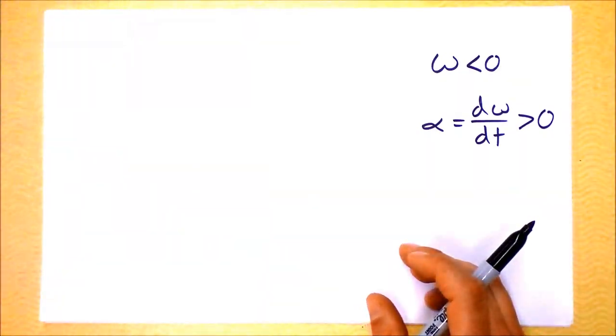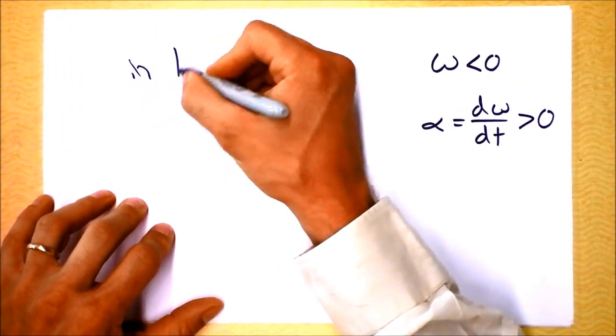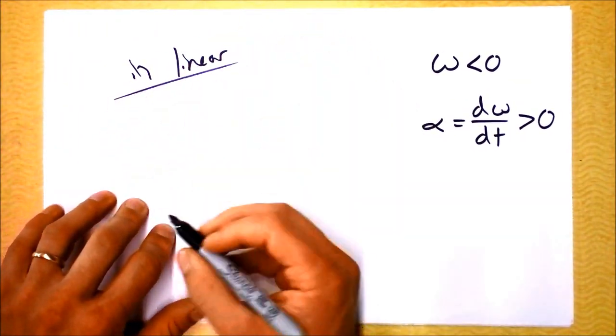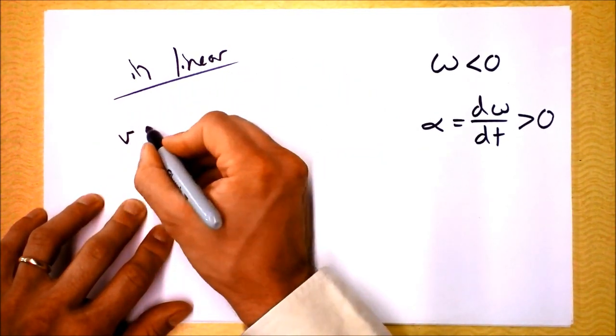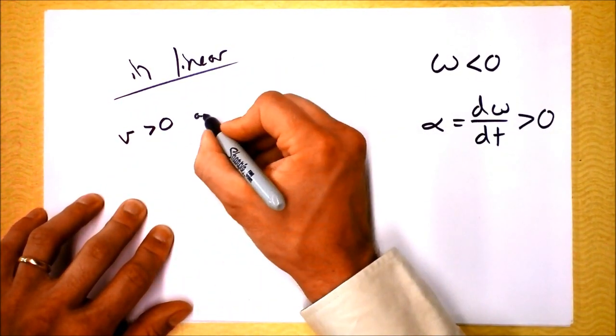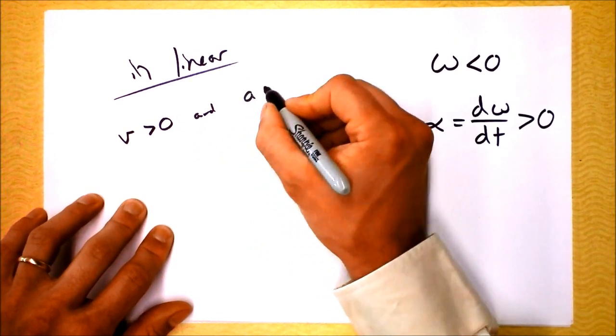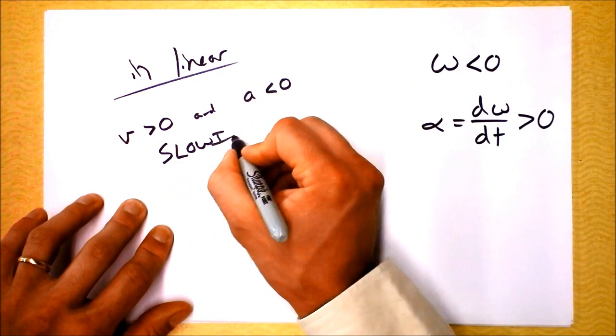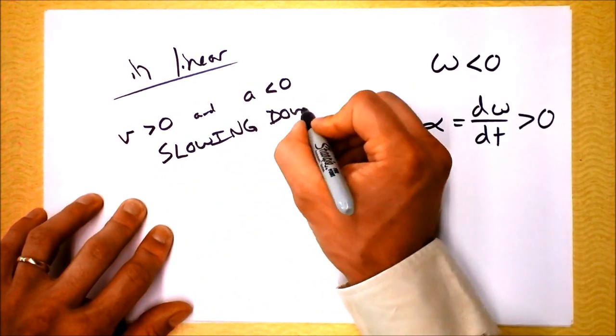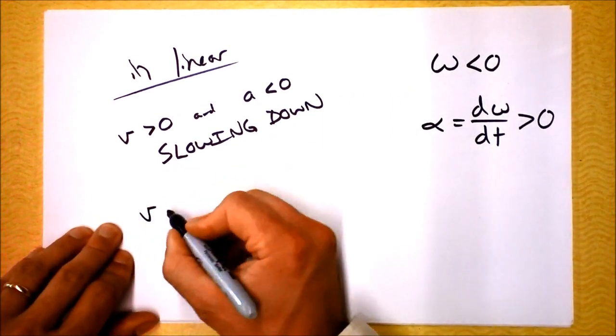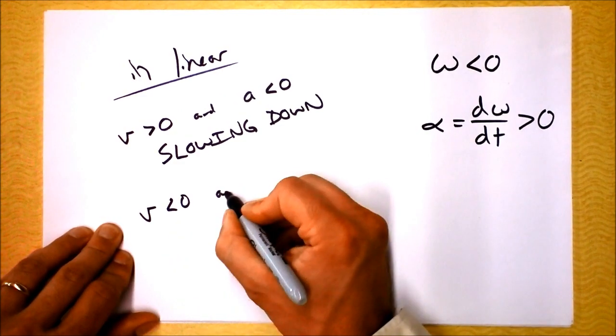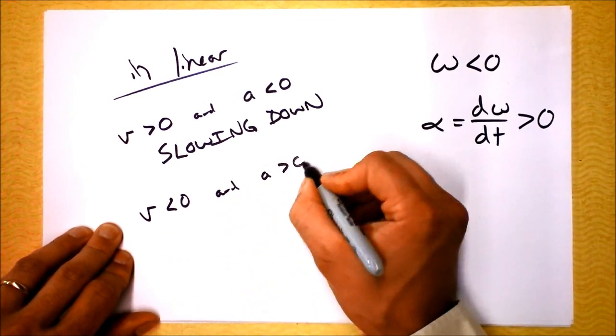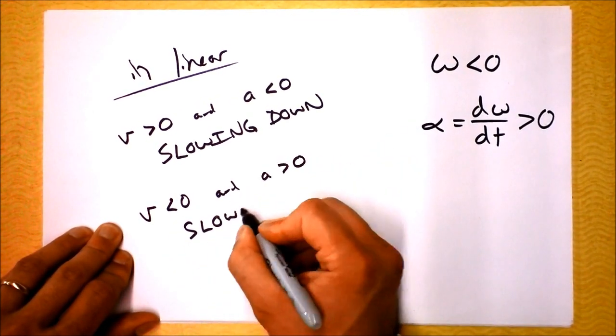This is akin, this is, you know, in linear, we have a very similar situation where if velocity is positive and acceleration is negative, that's slowing down, right? And, of course, if velocity is negative and acceleration is positive, that's also slowing down.